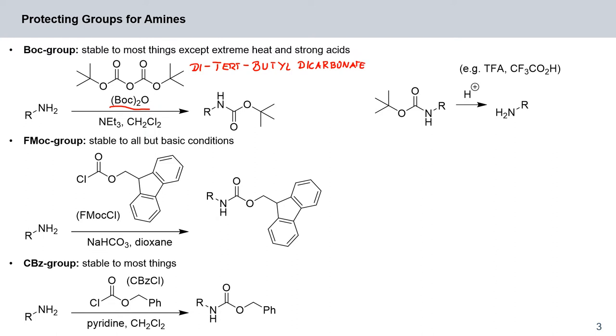So BOC2O or dicarbonate, and that is effectively now set up to react with a nitrogen lone pair. So these carbons here are extremely delta positive and you can flip the charge around here and attach your BOC group to the amine. So what you generate here, essentially this bit is your carbamate.